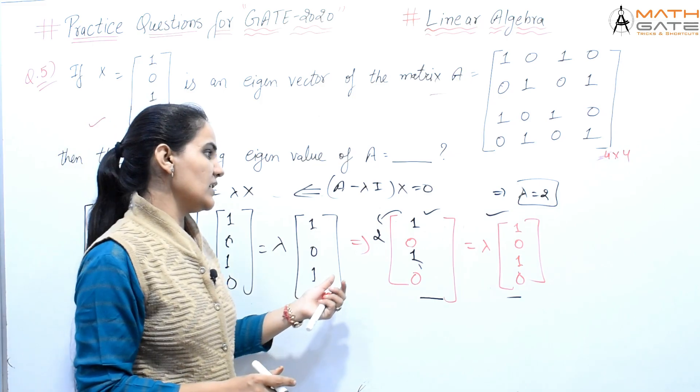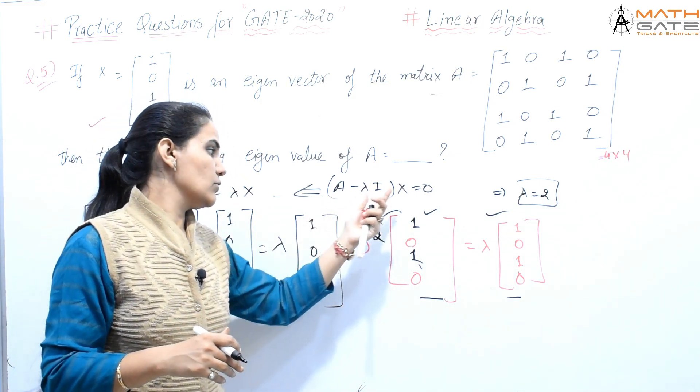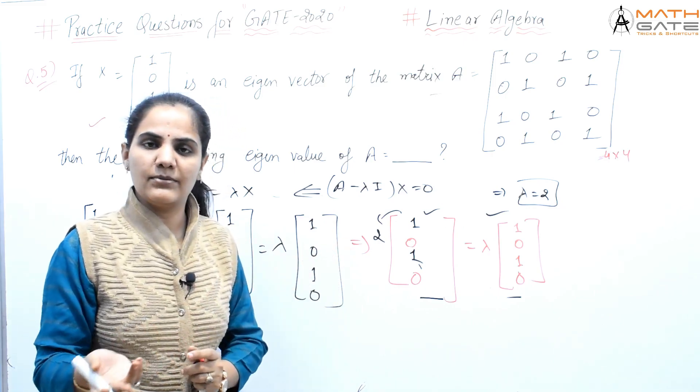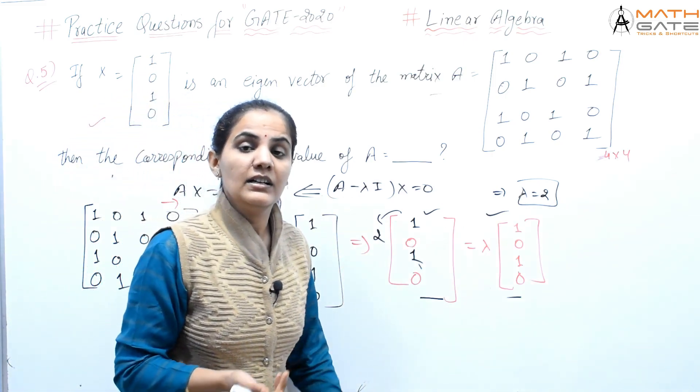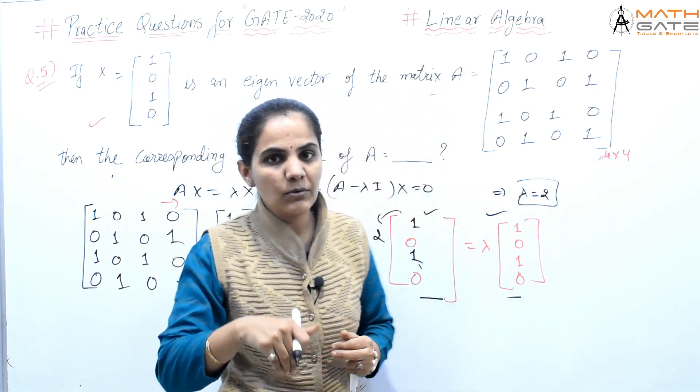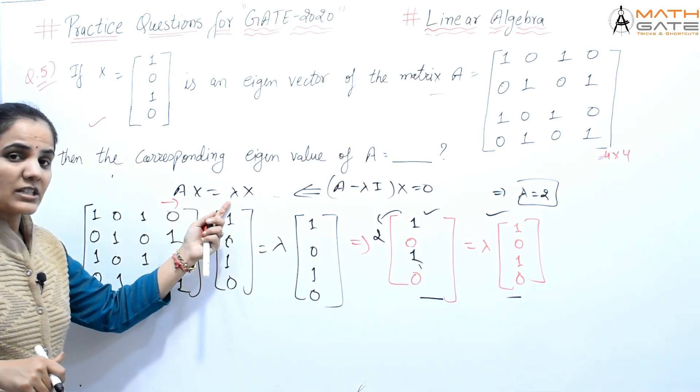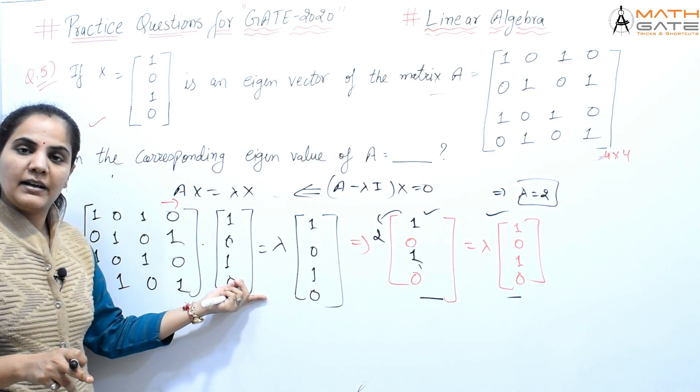Otherwise, students, what would you have to do? First, you'd have to work backwards from A minus lambda I equals 0, then do the comparison, then solve. But with this method, how simple it is! Whether eigenvector or eigenvalue is given - if either of these two is given - suppose lambda is given and you're asked to find the eigenvector, or vice versa, I would apply this same method.